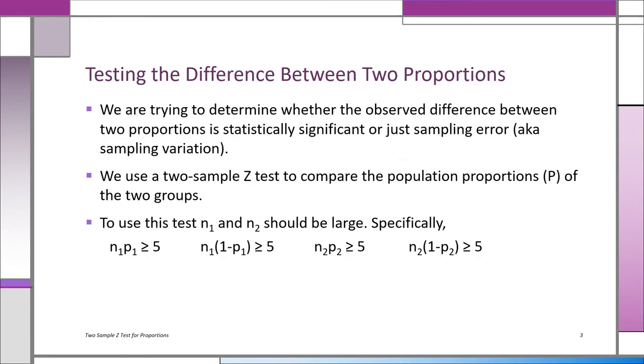We're going to be using the z as a way of determining whether the observed difference between the two proportions is significant or just sampling error. Now to use the z we need a larger sample. There won't be a t version of this, so for small samples, forget it—you can't do the t-test. It has to be relatively large, and here are the rules on the bottom.